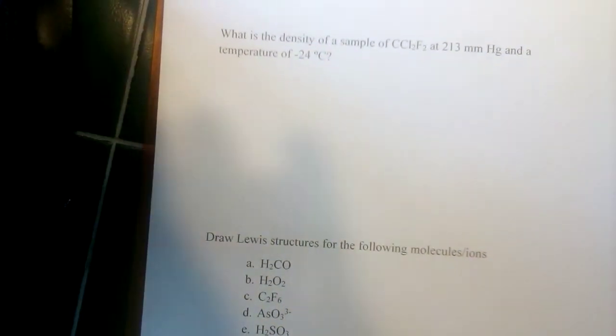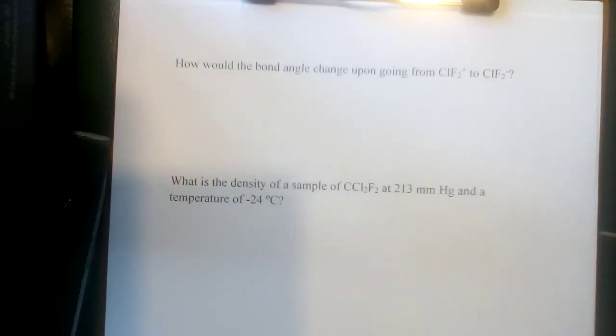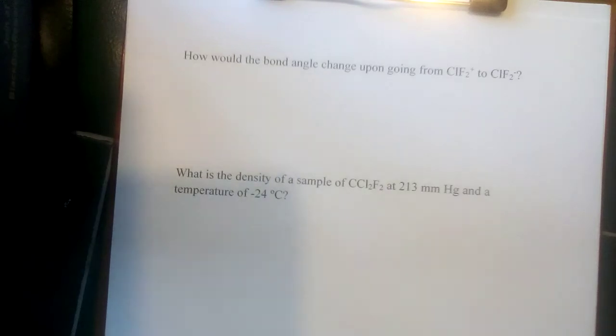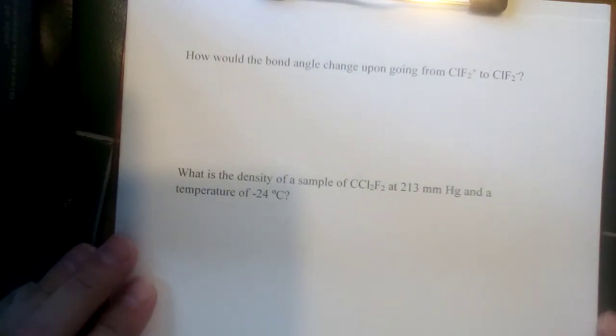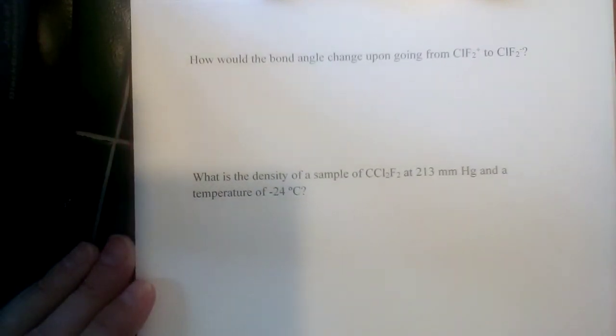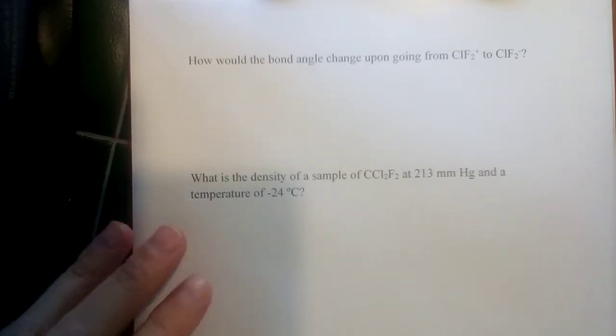Okay, carrying on here to page three. How would the bond angle change upon going from ClF2 cation to ClF2 anion? So bond angle, that's going to be a function of molecular structure. So we need to draw these two molecules and figure out what their shapes are, molecular geometries, and we can tell what the bond angle would do then.